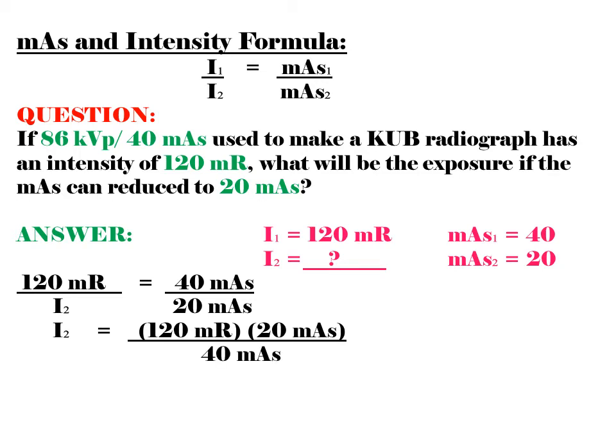Let's simplify the following and cross multiply. It will become I2 equals 120 mR multiplied by 20 mAs over 40 mAs. Let's cancel mAs on both 20 and 40. Then, 20 multiplied by 120 mR equals 2400 mR, divided by 40, it will become 60 mR. So our intensity 2 is 60 mR.